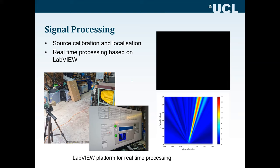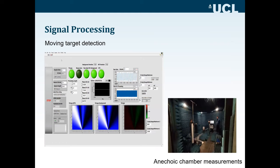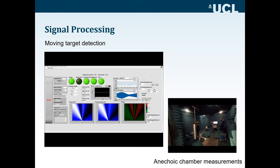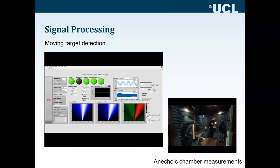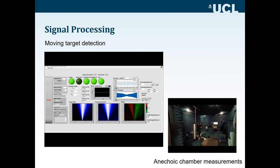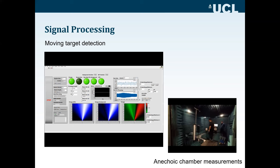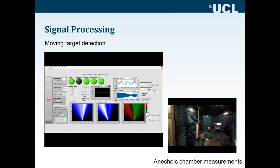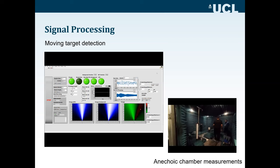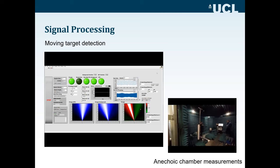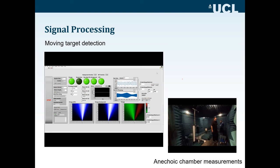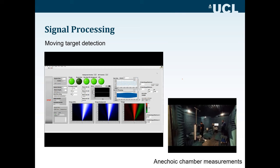This video shows what sort of processing can be achieved. My colleagues are in the chamber walking around, and on the left in real time you can see the target being detected — the scanning is picking them up as they move. The blue plot shows the scanning of the target. On the right, another algorithm attempts to detect where the target is going and where it's coming from — a leading and trailing scanning angle approach.